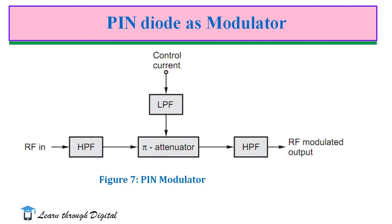Another application is the PIN diode as an attenuator, one of the important applications of the PIN diode. It acts as a variable attenuator in an RF circuit. Because of its variable resistance characteristics, the PIN diode can be used as a variable resistor in a variety of attenuator circuits.